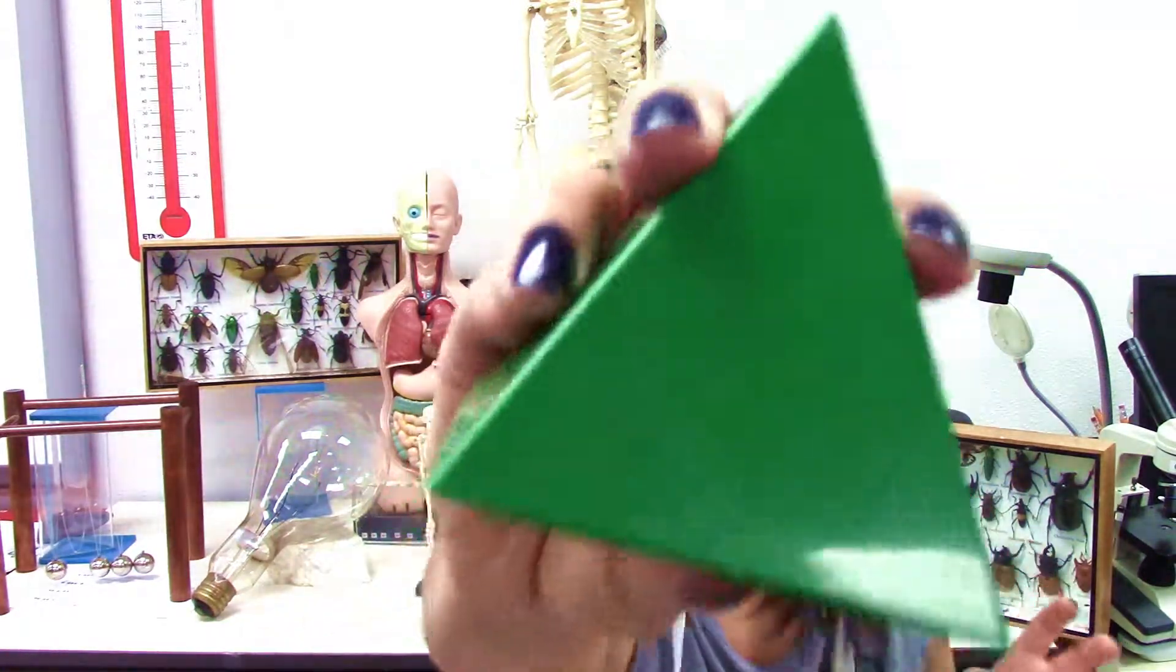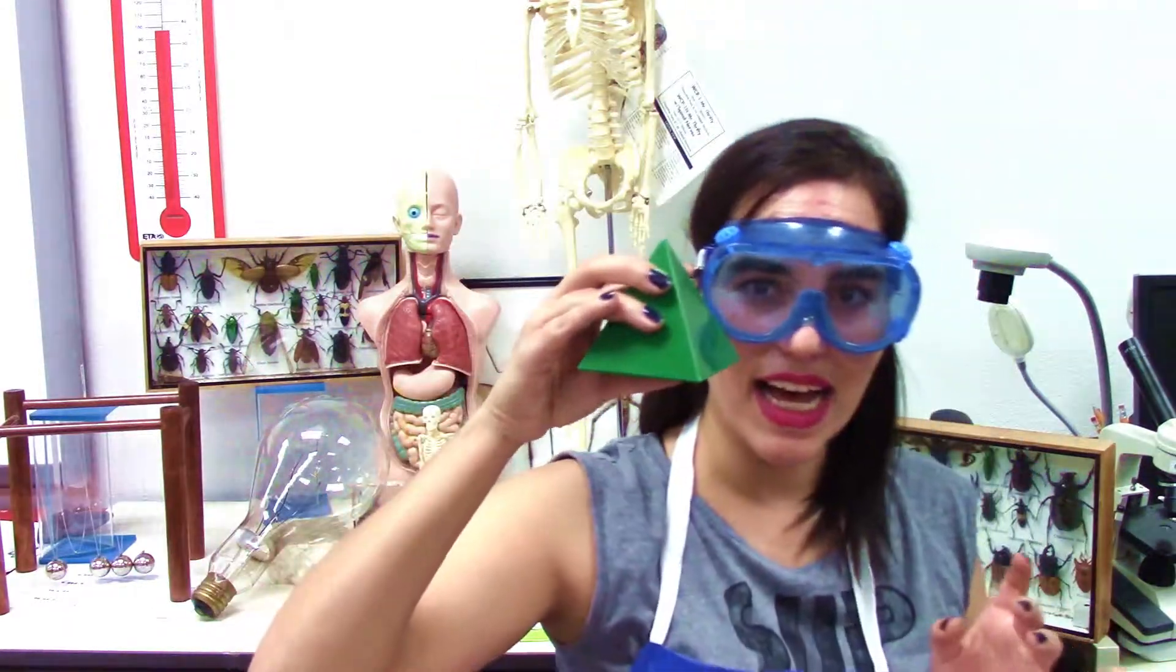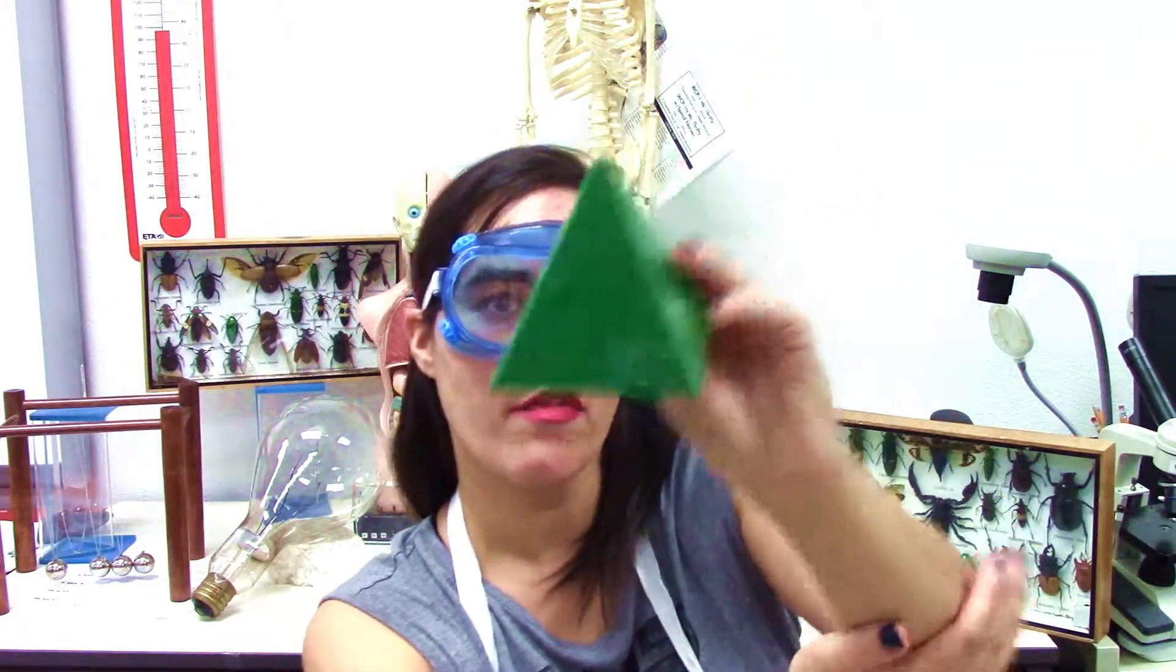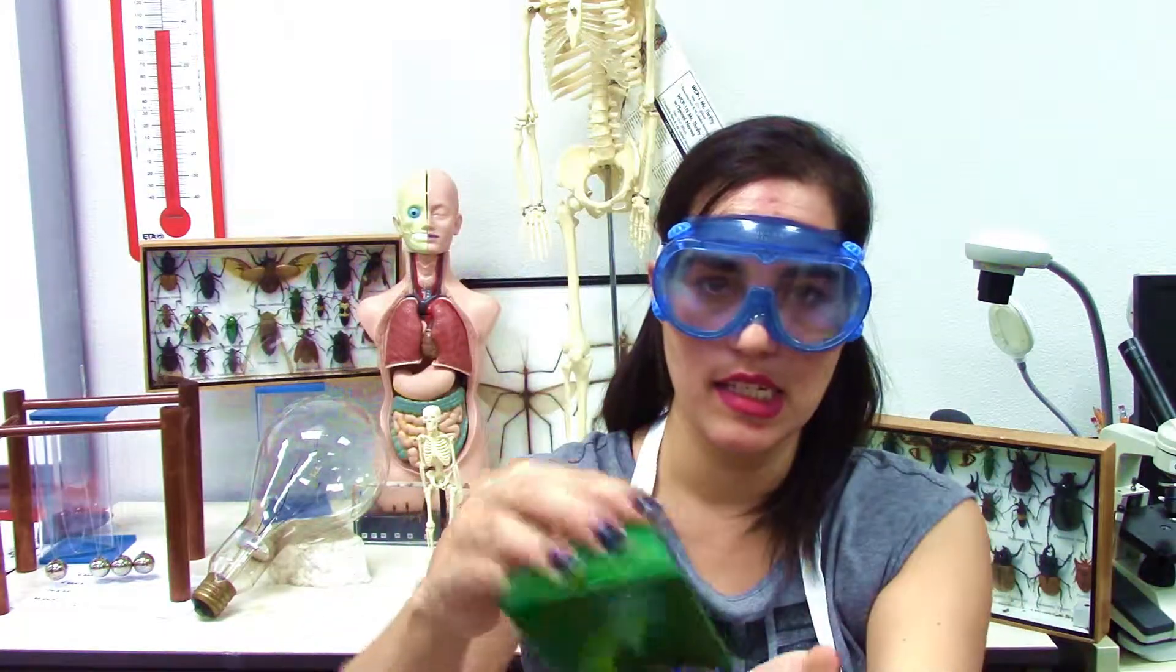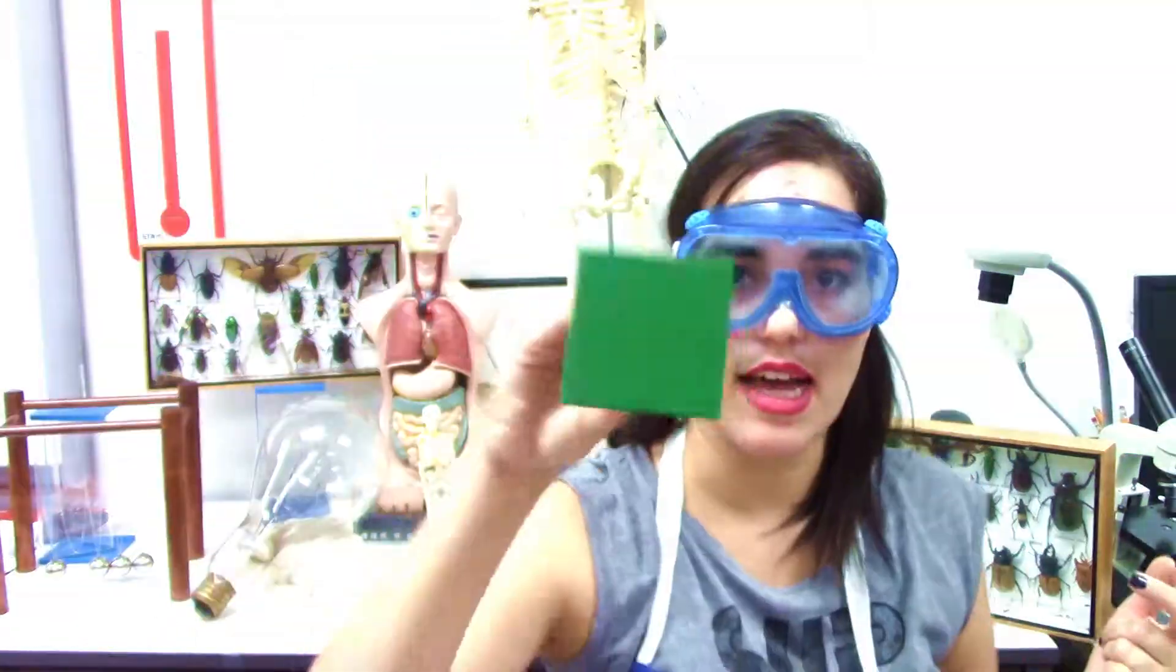It's not because it's green, it's not because of its orientation, and it's not because of its size. That's not what defines a 3D shape. What defines a 3D shape is the number of vertices, faces, and edges it has.